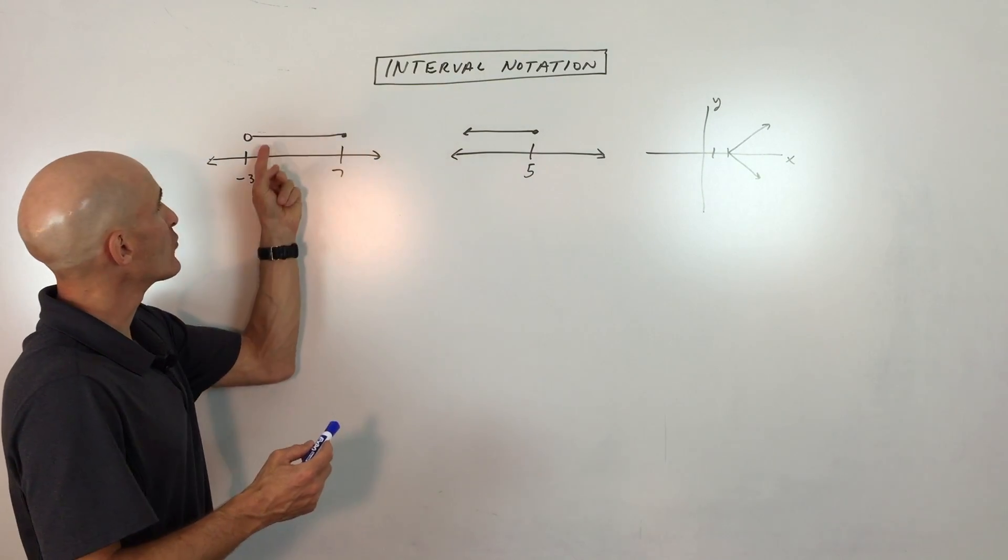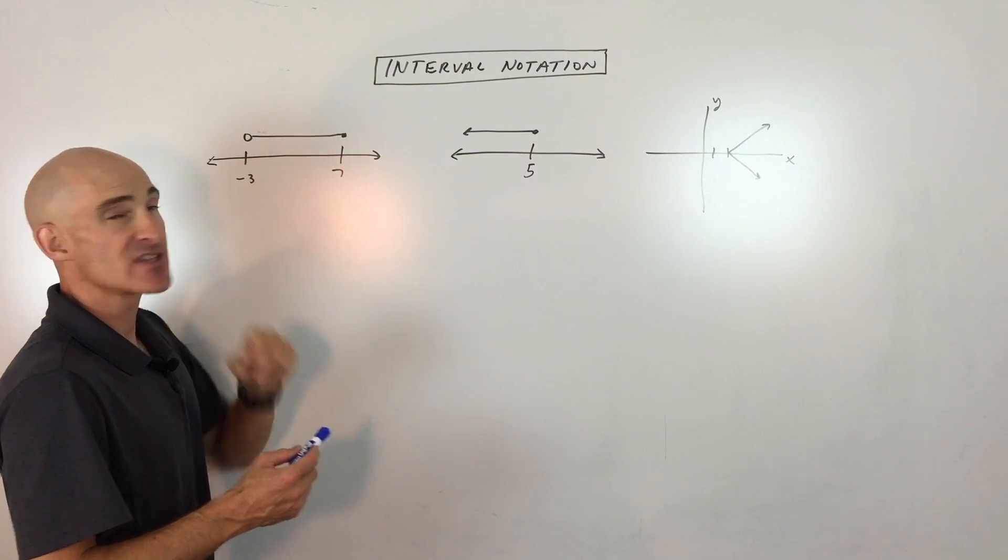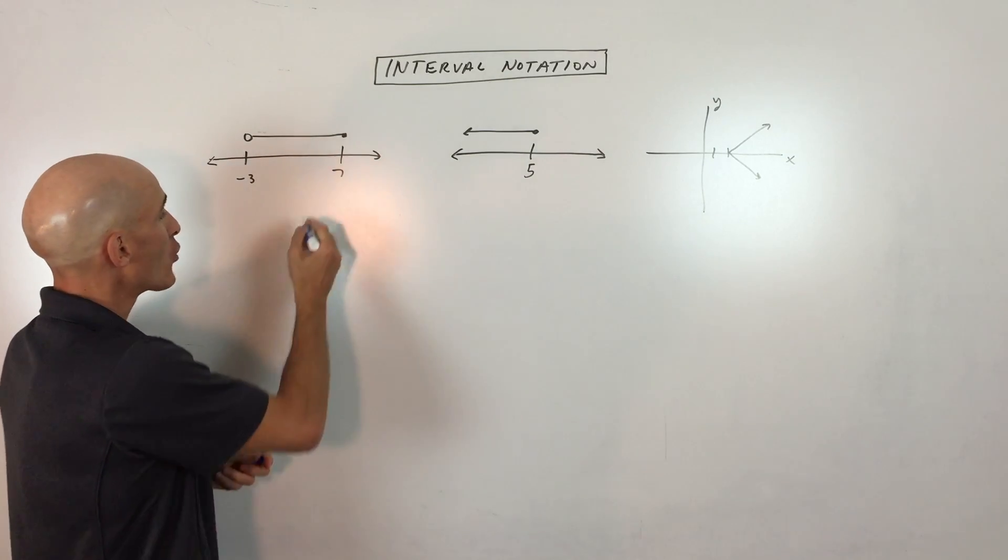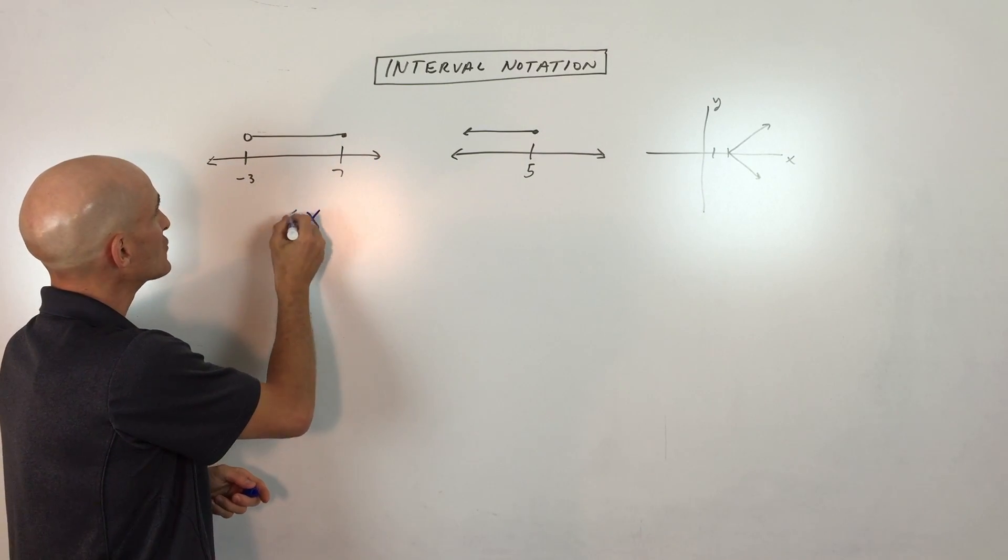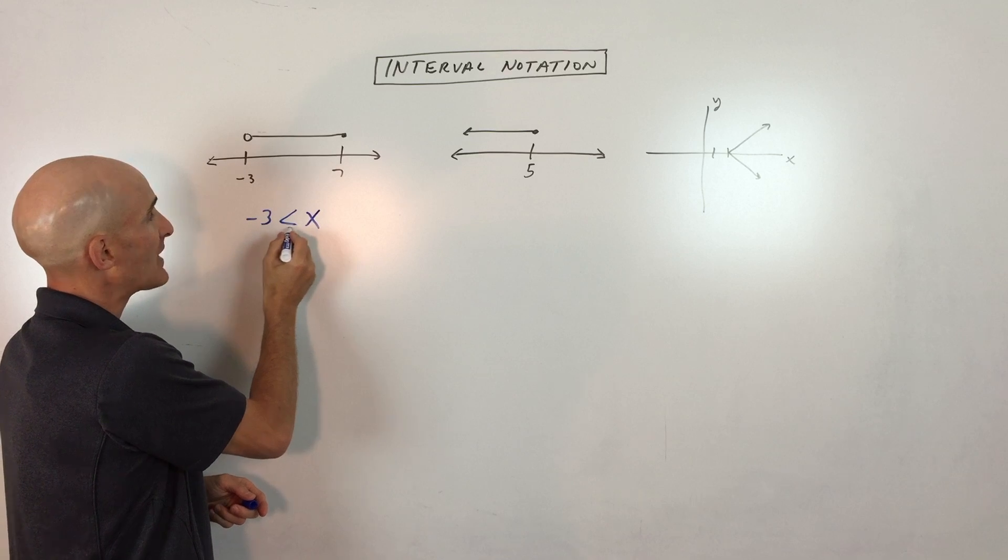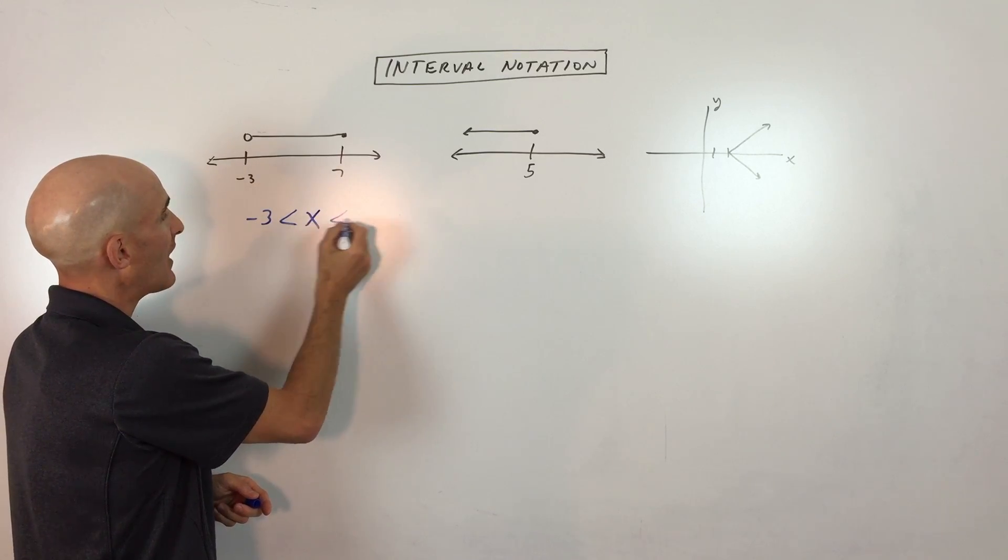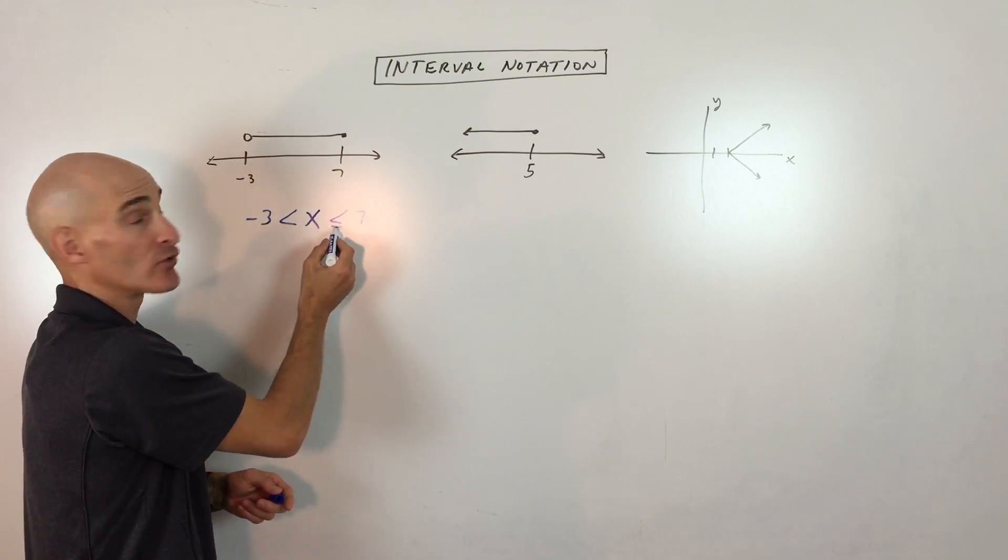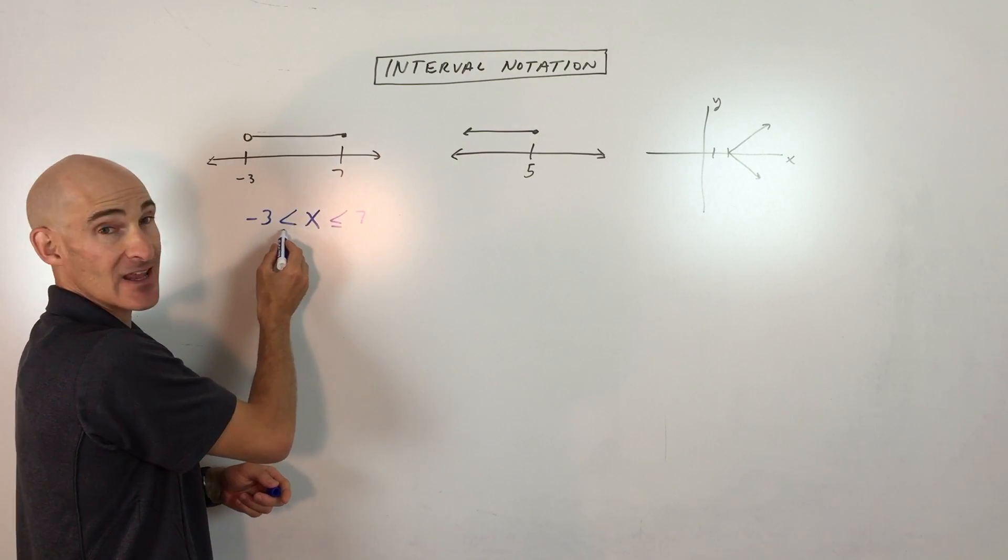If you look at a number line here, and we have this solution set graphed on the number line from negative 3 to 7, what you would normally do is say x is greater than negative 3 but not equal to, and x is less than or equal to 7. So that closed circle means equal to, the open means not equal to.